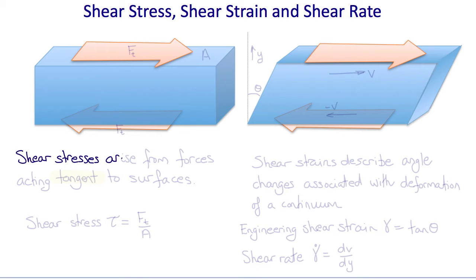Now, there are other kinds of stress. For example, shear stresses arise from forces acting tangent to surfaces rather than normal to surfaces. So if we imagine forces acting tangent to these surfaces with area A, then the shear stress in this example tau is Ft divided by A. Again, with units of force per area, but now it's tangent forces per area.